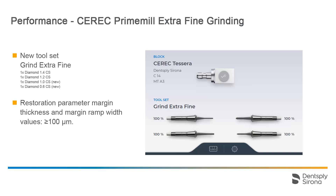With this mode, the extra-fine toolset is needed, which contains the following instruments: Diamond 1.4 CS, Diamond 1.2 CS, as well as the two new Diamond 1.0 CS and 0.6 CS. Please note that the restoration parameter for margin thickness and margin ramp width should be 100 micrometers or more.